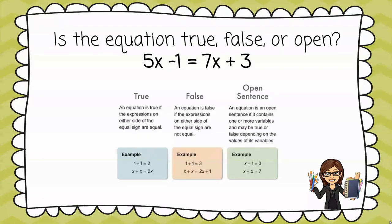In this video, let's take a look at the question: Is this equation true, false, or open? 5x - 1 = 7x + 3. Now I've given a few explanations of what a true equation would be, and that's an equation where both sides are equal. Not just that there's an equal sign, but are they equal? And look at the example: 1 + 1 = 2.